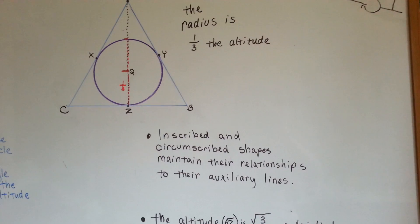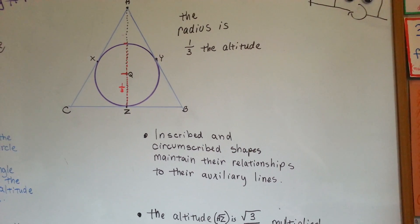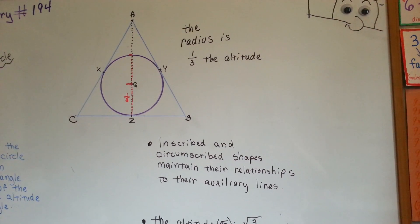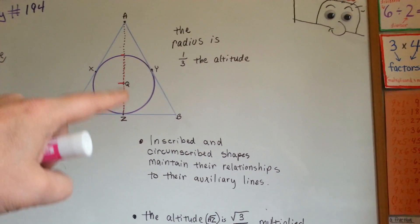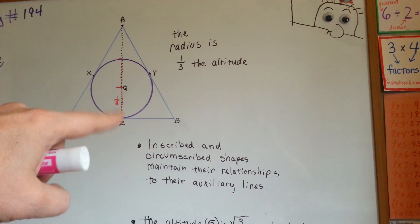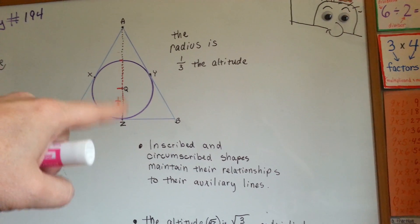Inscribed and circumscribed shapes maintain the relationships to their auxiliary lines. So, just because it's in here doesn't mean that it's not a radius anymore. It's still a radius.